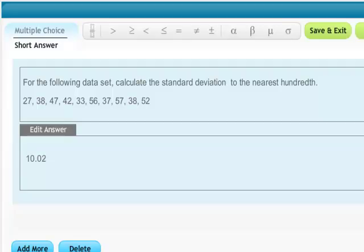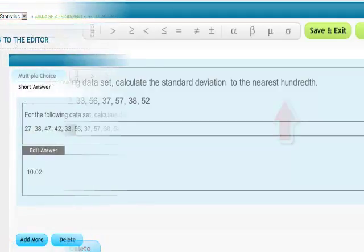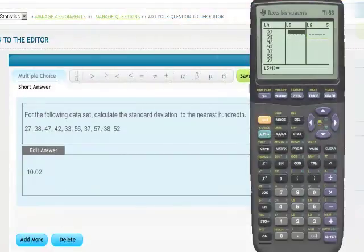In this question we're asked to find the standard deviation for the given data set, and our answer is to be rounded to the nearest hundredth. To do this problem we'll be using the TI-83.